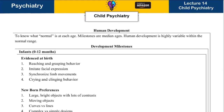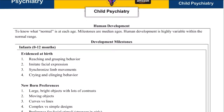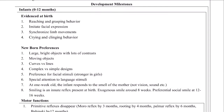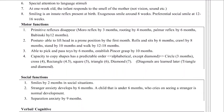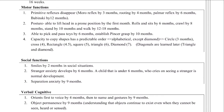In infants, once they are born they are able to imitate facial expressions, they have crying and clinging behavior, synchronized limb movements, and they reach and grasp. They have preferences for large bright objects and moving objects. There are different primitive reflexes: the Moro reflex disappears by three months, rooting by four months, palmar reflex by six months, and the Babinski reflex by 12 months. This must be known.